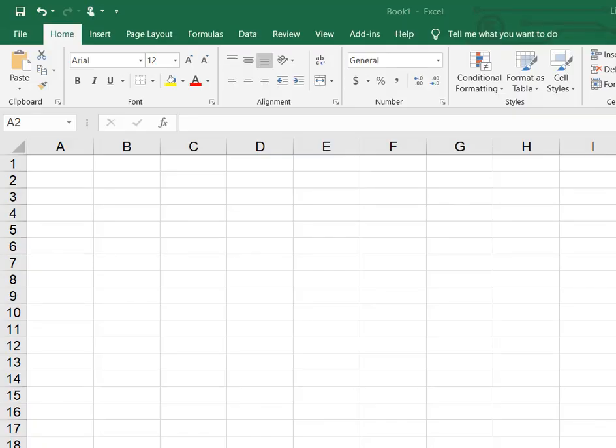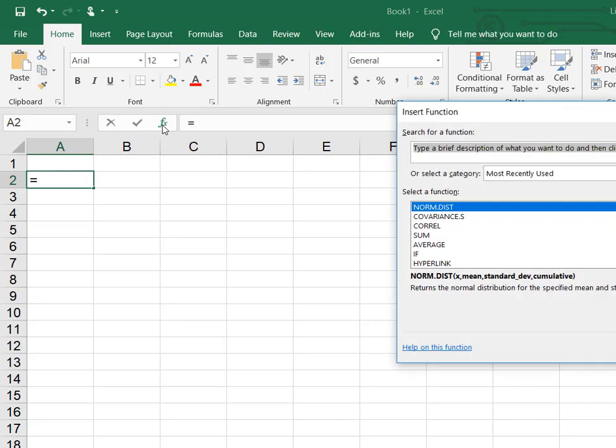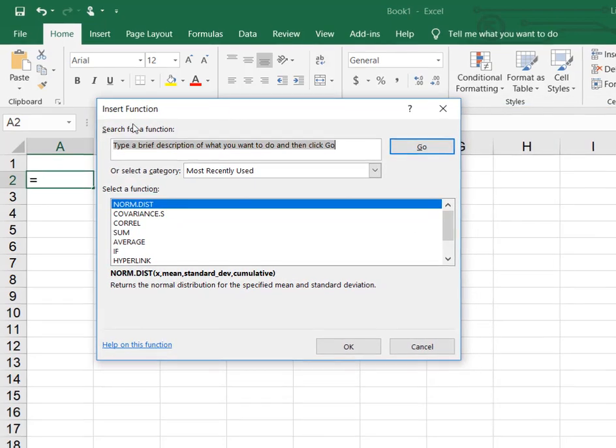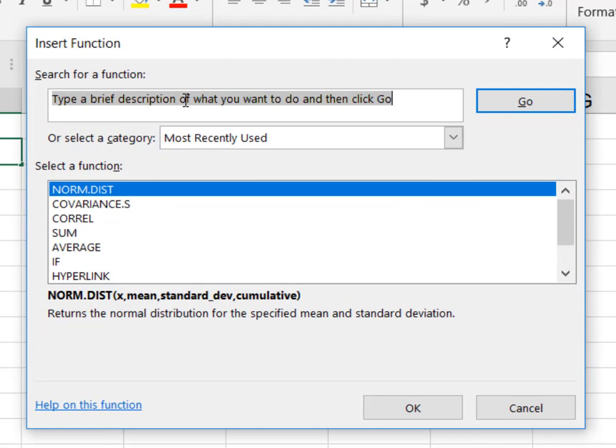So here I am in Excel, and I think this is Excel 2018. And so what I need to do is I want to come here to this little f of x, which is going to be my function. And I'm going to double click on that. It's going to give me a search for a function, and so it's going to say, give me a description of what you want to do. And so in this case, I'm going to start typing. I'm going to type in normal, and I'm going to say go.